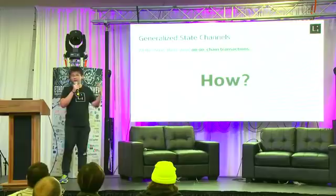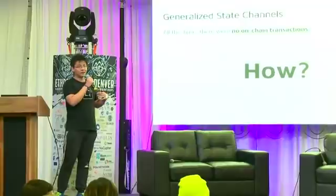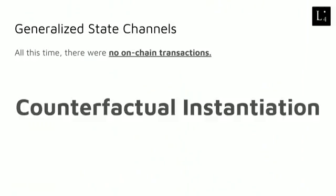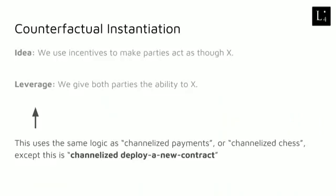The thing we really need to solve is how to deploy contracts without on-chain transactions, because playing the game of Go in an on-chain version kind of requires a new contract to be deployed. Our technique for doing this is called counterfactual instantiation. The definition of counterfactual instantiation is that we use incentives to make the parties act as though a contract is on-chain, even though the contract is not on-chain. We call such contracts counterfactual. The way we achieve this kind of incentives is by giving both parties the ability to put the counterfactual contract on the blockchain if they need to. This is really similar to channelized payments or channelized chess — we use incentives to make parties act as though X, by giving both parties the ability to do X. In this case, X is deploy a new contract.